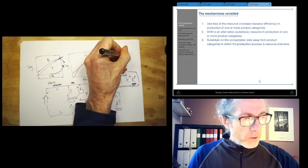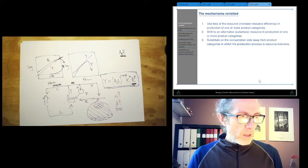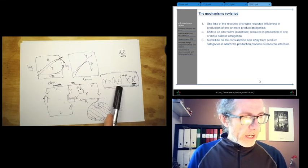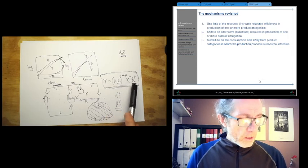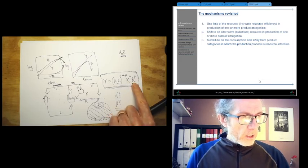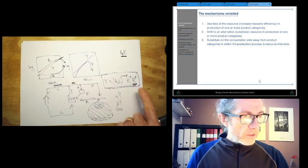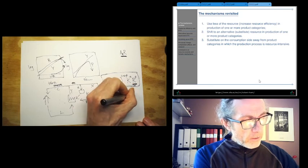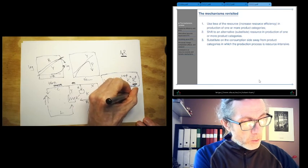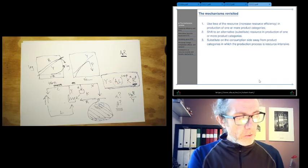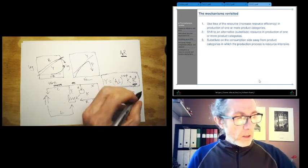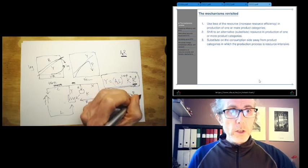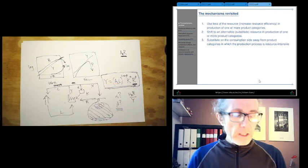So we need to adapt this function to allow for directed technological change, making resource efficiency greater. This function as it is, it does say that if the price of R goes up, we'll use less R. And in fact, as you know, the factor share of R, WRR over Y is constant. So if WR goes up, holding Y constant, R will go down. So there is some flexibility in this model.